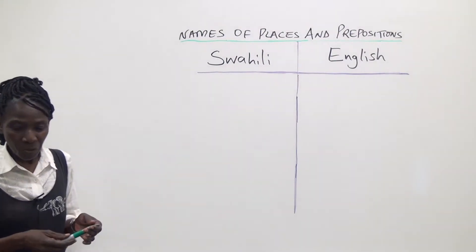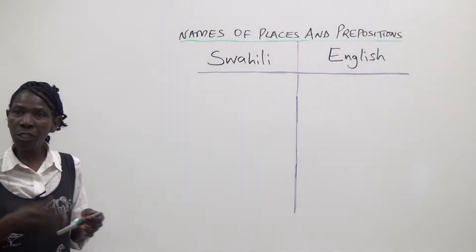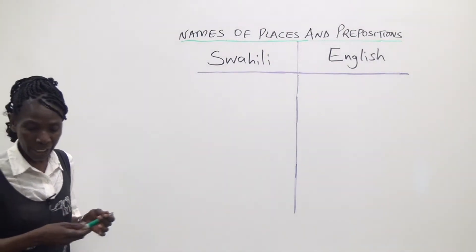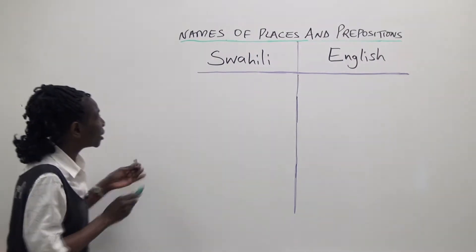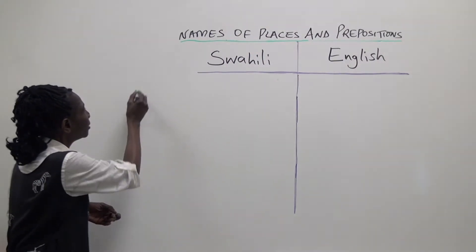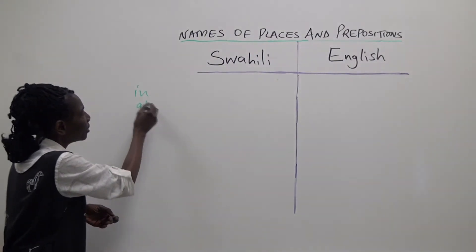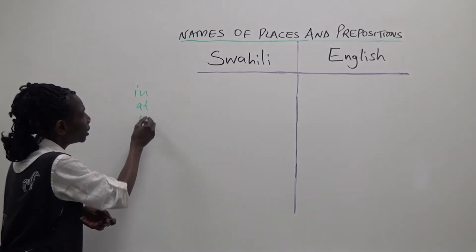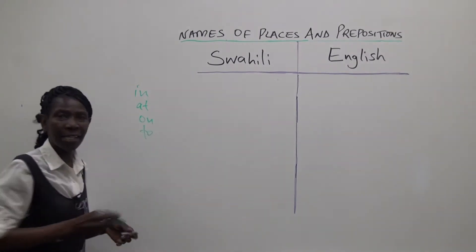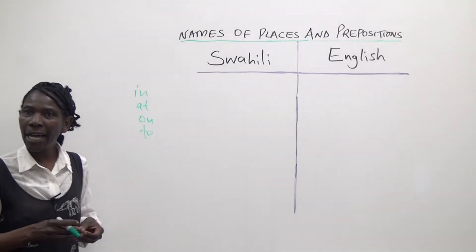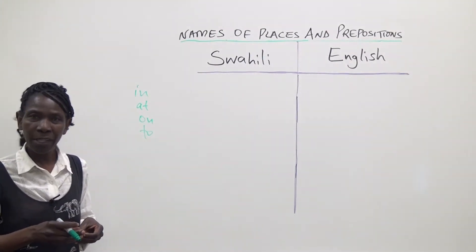In Swahili, prepositions that are used to express location, such as in, at, on, to, and others, are not used with proper nouns.